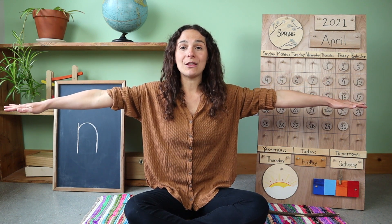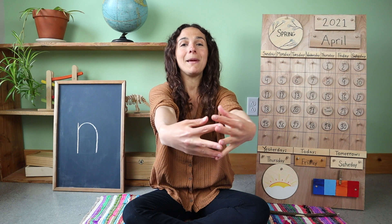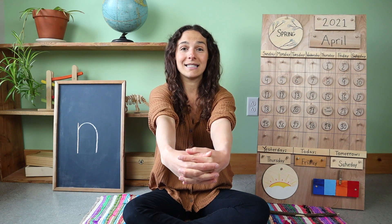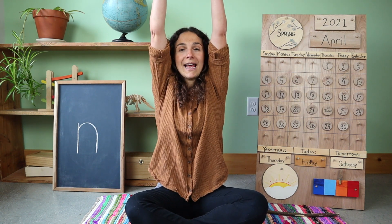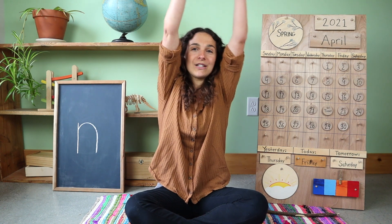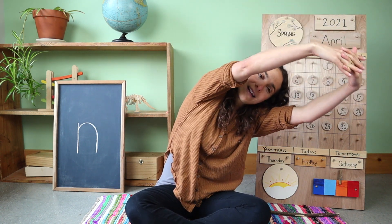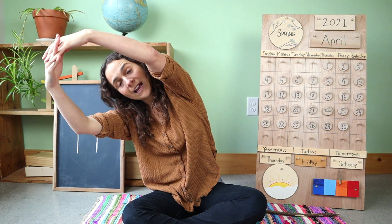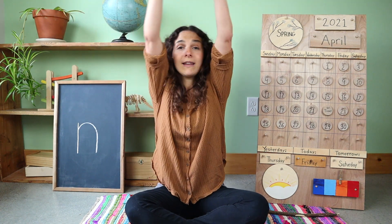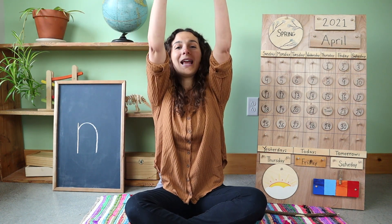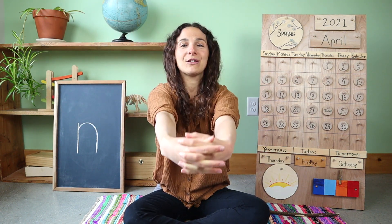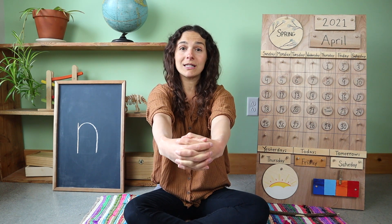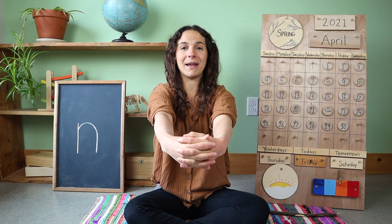Take those airplane wings and make a big circle out in front of you. Take that circle up over your head and stretch to one side, stretch to the other side, one last stretch up at the top, and bring your circle back down in front. If you know the words to this song, you can sing along with me.